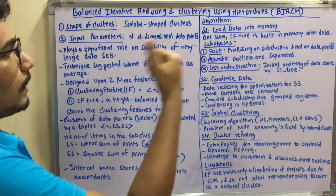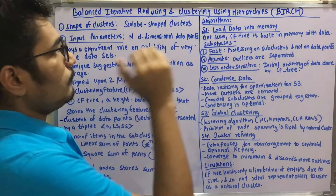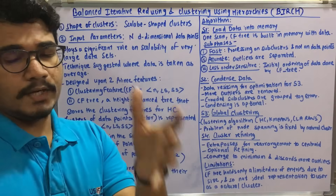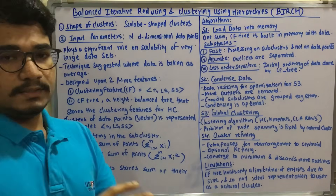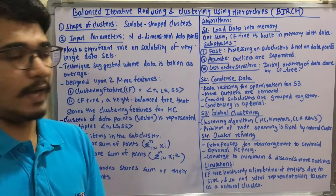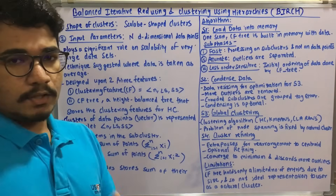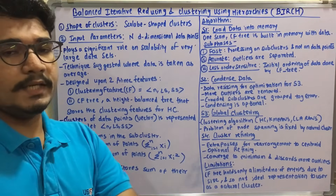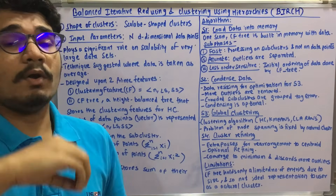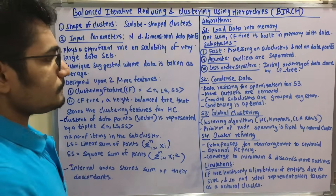Now let's look at the algorithm. The very first step loads the data into memory. In the first scan, the CF tree is built into memory with all the data points, including all noise and outliers. Then there are sub-phases. The first sub-phase is the fast phase — a processing technique on sub-clusters, not on individual data points. The initial cluster is broken into many small sub-clusters, and processing is performed on those sub-clusters rather than the entire large dataset.